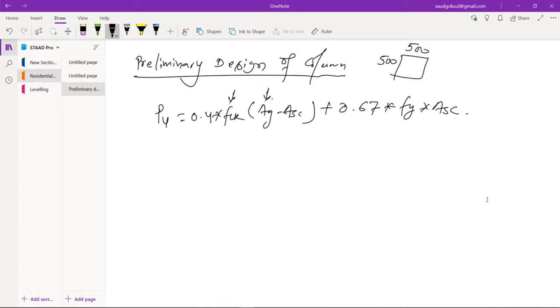Asc is the area of the steel. Suppose there is only one bar of 12mm in this column. In that situation, asc is equal to π/4 times 12 squared. If we have two bars of 12mm in this column, then we will have asc as π/4 times 12 squared times 2.